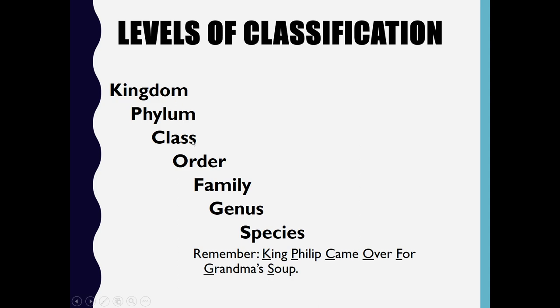The levels are arranged as follows: Kingdom, Phylum, Class, Order, Family, Genus, Species.